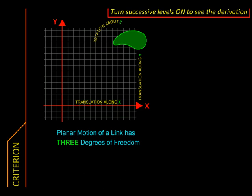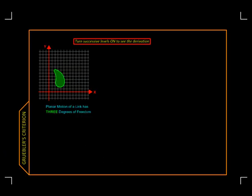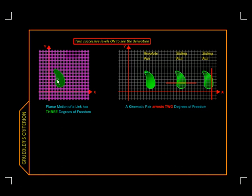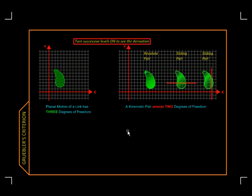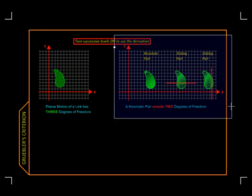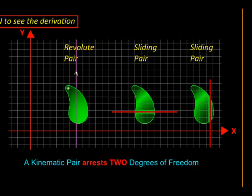Now let us see the effect of adding a kinematic pair. Here we have the same rigid body, but we have constrained its motion by adding a kinematic pair. So here we have added a revolute pair, here we have added a sliding pair, another sliding pair, and so on.